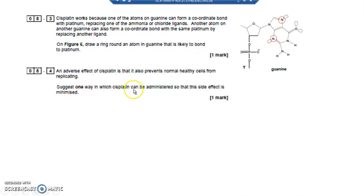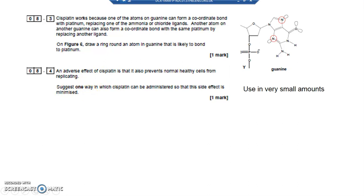Suggest one way in which cisplatin could be administered so that the side effect of it being toxic is minimized. Administer it in small amounts.